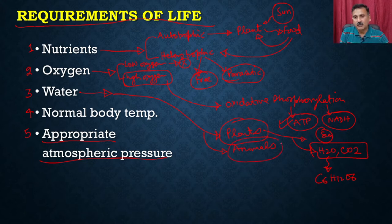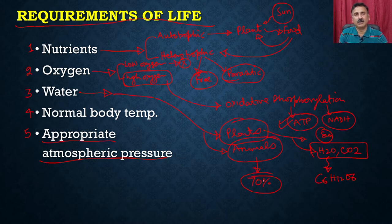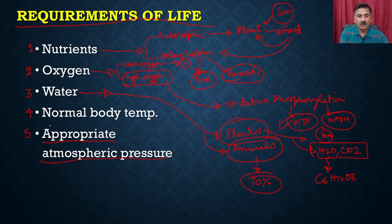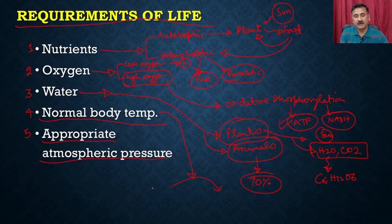In animals also, the animal body is approximately more than 70 percent water. Water is very essential for the continuity of life — if you recall when we were talking about the origin of life, the primordial oceans where cells were formed had plenty of water working as a medium to catalyze different types of reactions. Apart from water, we also require normal body temperatures, and based on body temperature, organisms could be cold-blooded or warm-blooded animals.